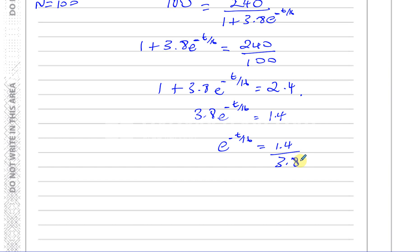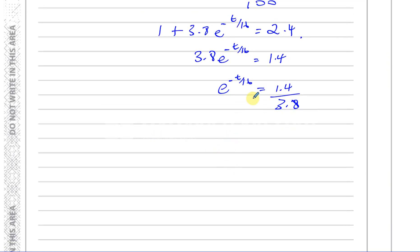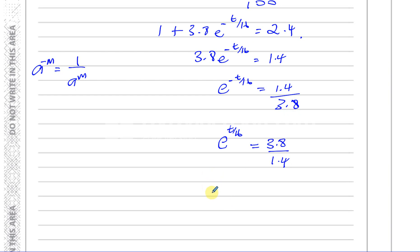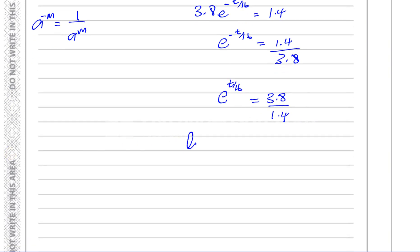Now we solve by taking logs. I like to make this a positive power first. Recall that a to the power of minus m equals 1 over a to the power of m. So taking the reciprocal of both sides, e to the power of t over 16 equals 3.8 divided by 1.4. Taking the natural log of both sides, ln of e to the power of t over 16 equals ln of 3.8 divided by 1.4.